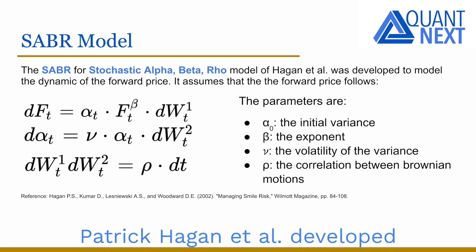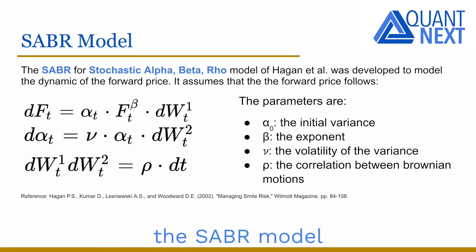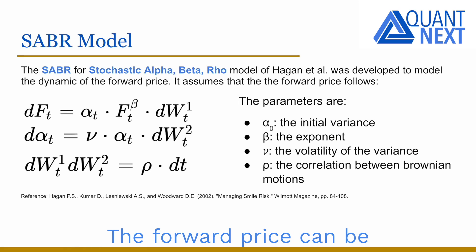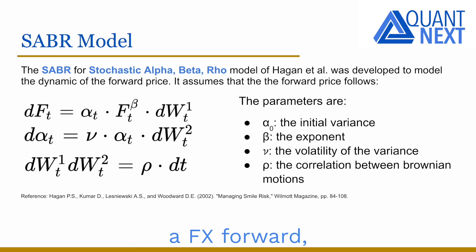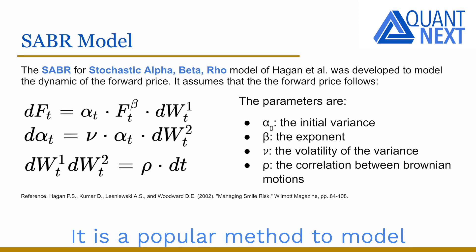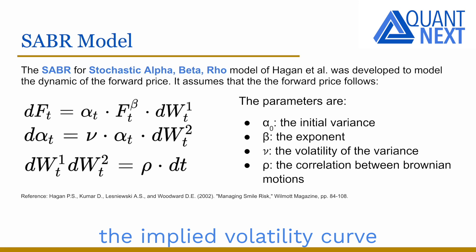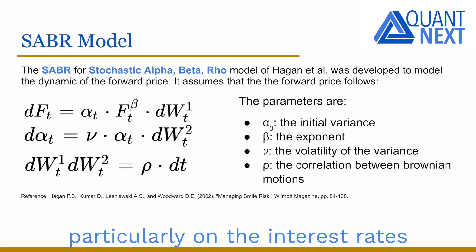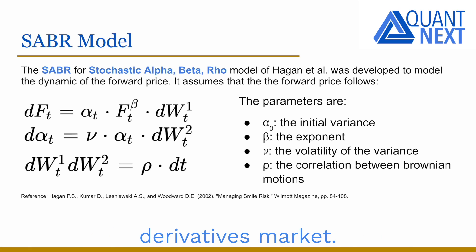Patrick Hagan et al. developed the SABR model to model the dynamic of forward prices. The forward price can be a forward swap rate, an FX forward, or a forward stock price depending on the market we consider. It is a popular method to model the implied volatility curve, widely used by practitioners, particularly in the interest rates derivatives market.